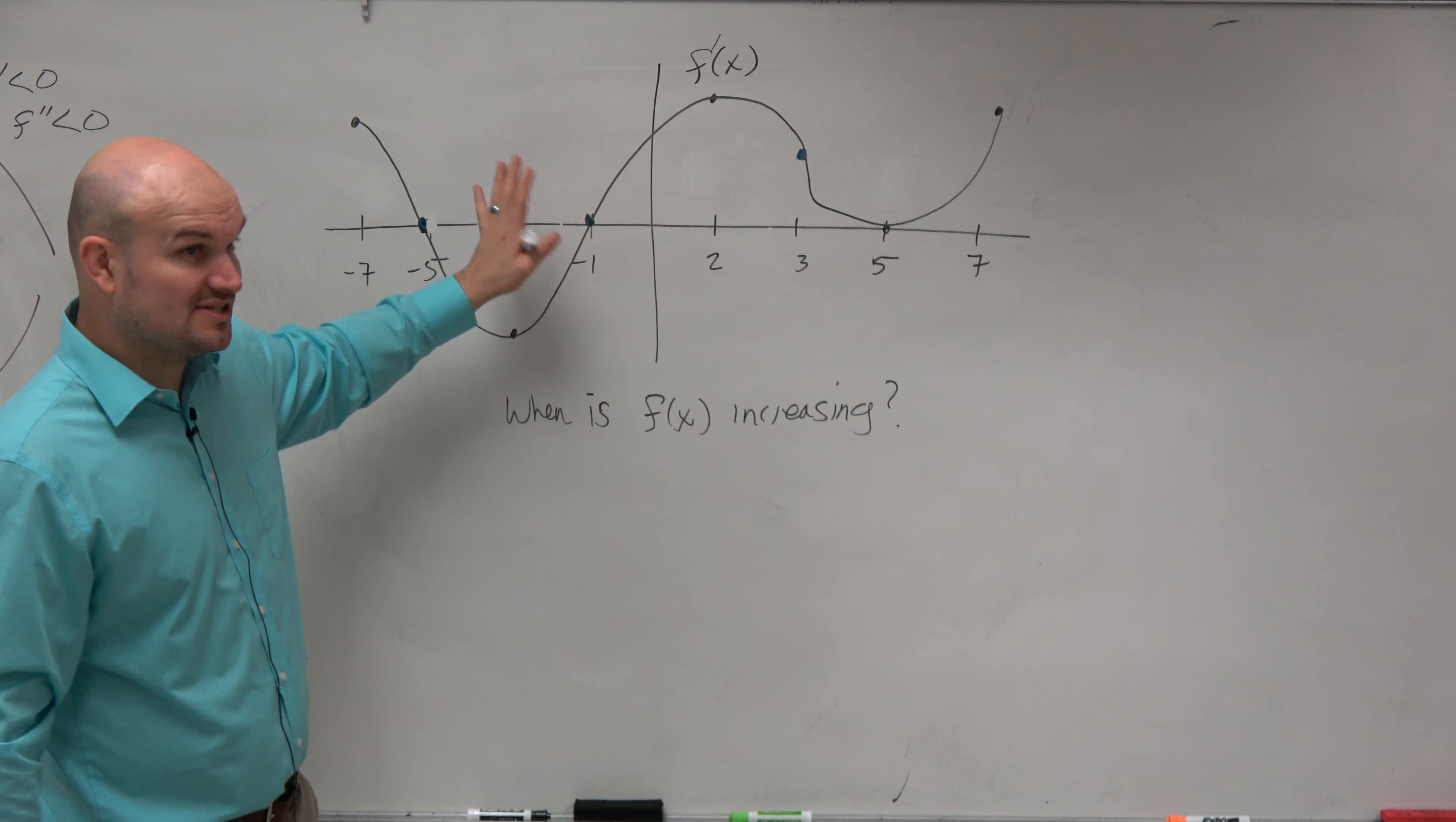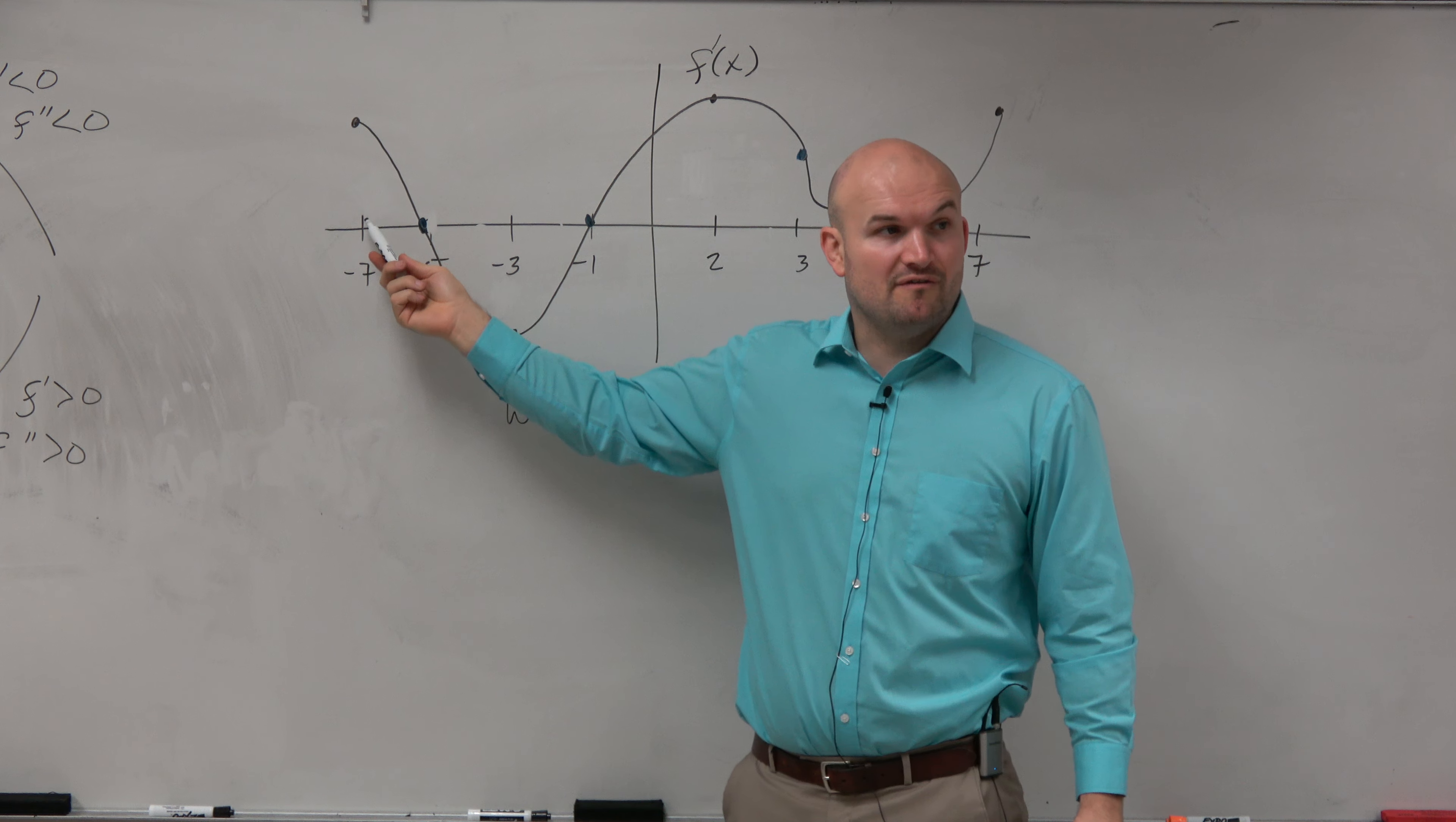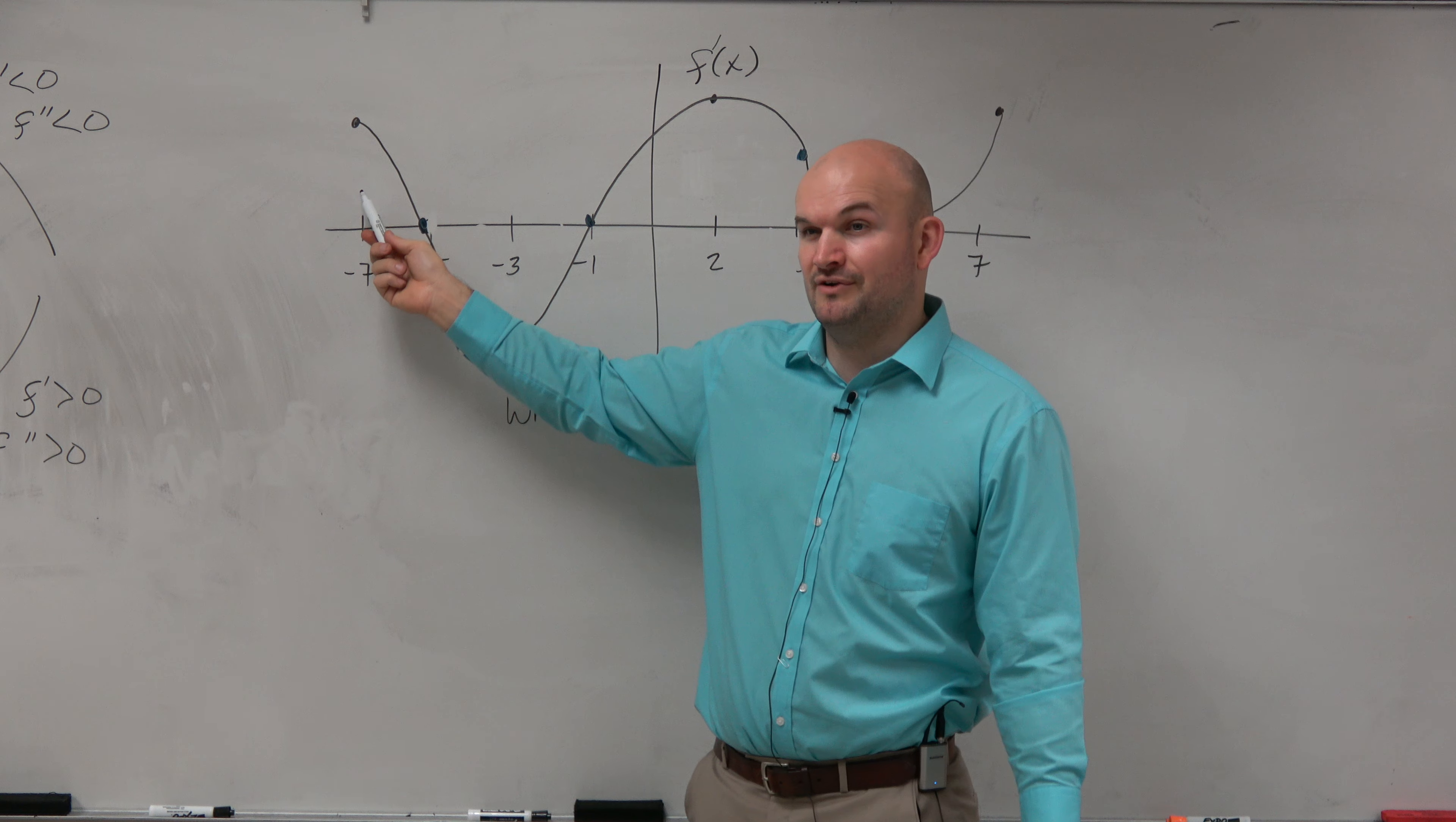So remember, this represents the slope. This is basically just saying slope here. If you look at this area, is the slope positive or negative for f of x? Remember, this is the graph of f prime of x. This shows what the slope is at each value. We don't know what the values are, but is the slope positive or negative here?